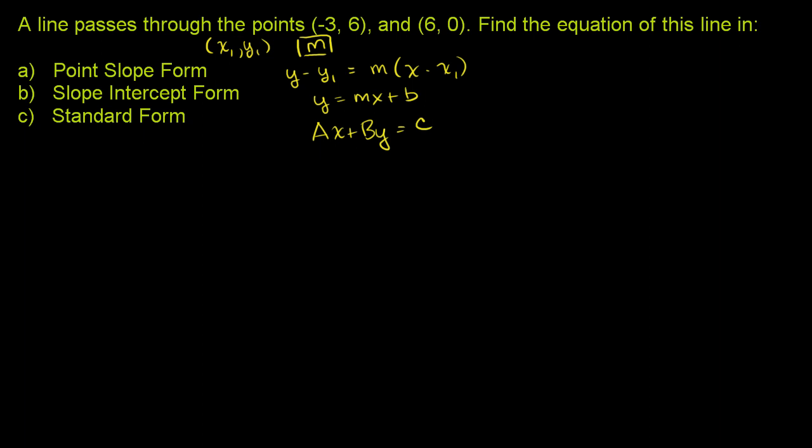Just to remind ourselves, slope m equals the change in y over the change in x. Now what is the change in y? If we view this as our end point, if we're going from here to that point, what is the change in y? Well, our end point is 0. y ends up at 0, and y was at 6. So our finishing y-point is 0. Our starting y-point is 6.